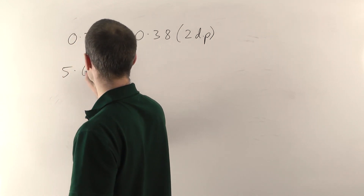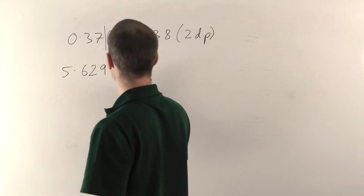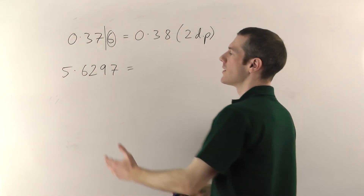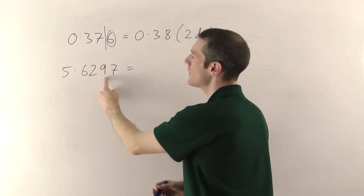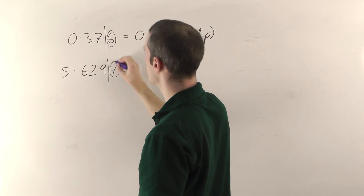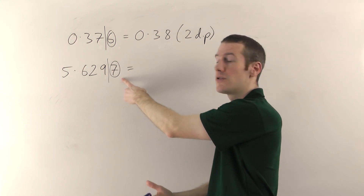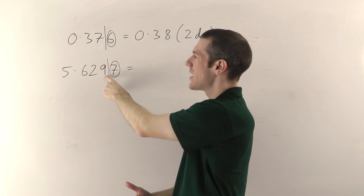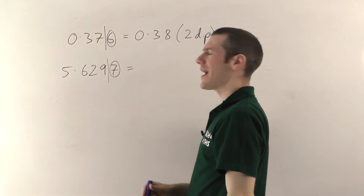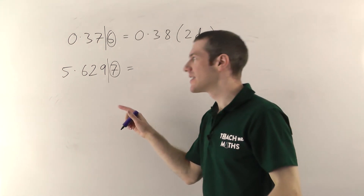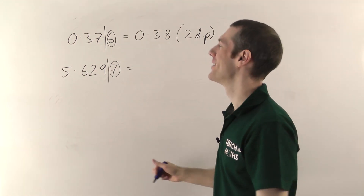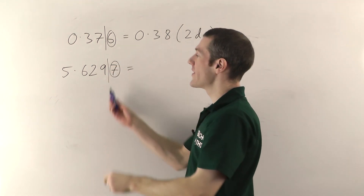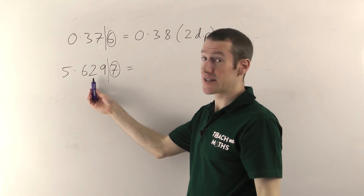Let's try 5.6297, rounding to three decimal places. Count one, two, three — put your line there. Look at the next one — it's five or more again, so this one goes up. But it's a 9. I can't make it into a 10. So what happens? When you have to add one onto a 9, it rolls over to a 0 and then you add one onto the next column — exactly the same as normal counting with decimals.